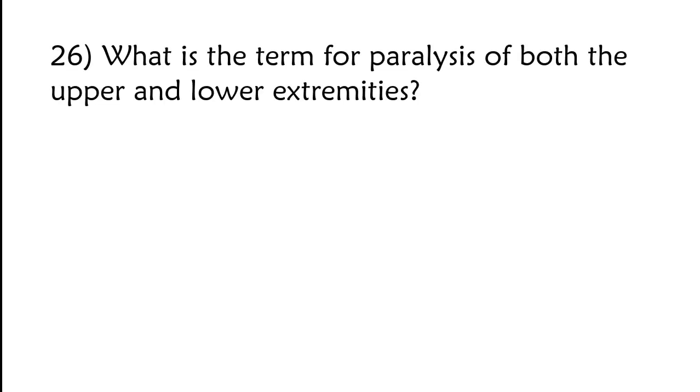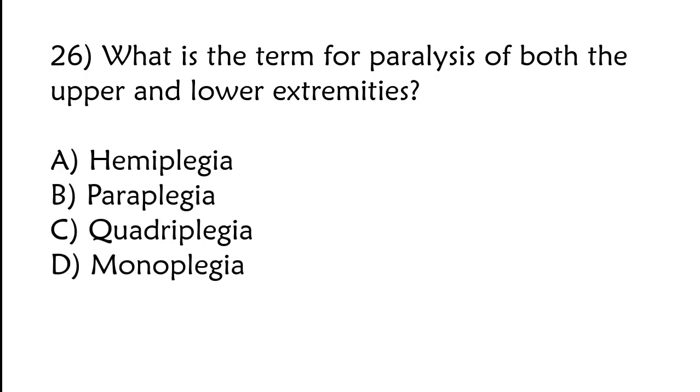What is the term for paralysis of both the upper and lower extremities? Hemiplegia, paraplegia, quadriplegia, monoplegia. The correct answer is option C, quadriplegia.